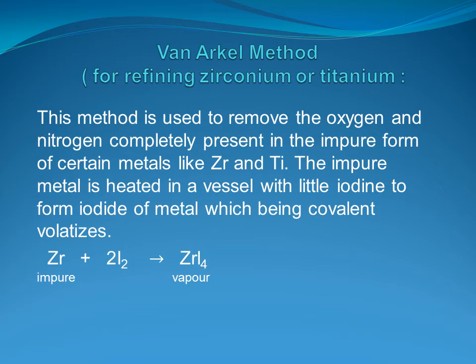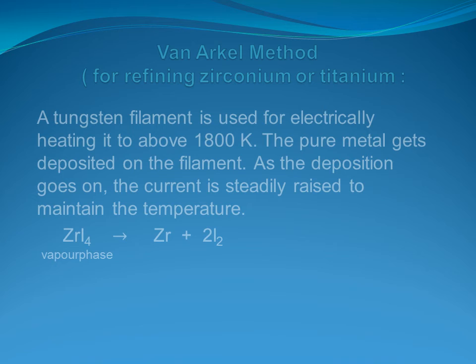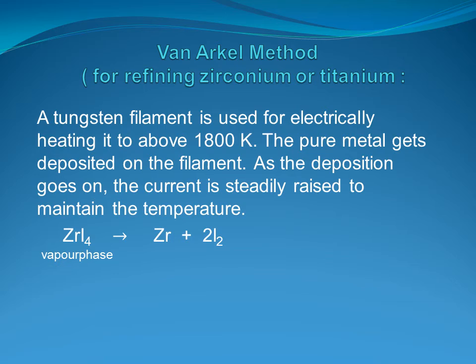In Van Arkel's method for refining zirconium, we use iodine. This method is used to remove oxygen and nitrogen completely present in the impure form of certain metals like zirconium and titanium. The impure metal is heated in a vessel with a little iodine to form an iodide of the metal, which being covalent, volatilizes. A tungsten filament is used for electrically heating zirconium to above 1800 Kelvin. The pure metal gets deposited on the filament, and as the deposition goes on, the current is steadily raised to maintain the temperature.